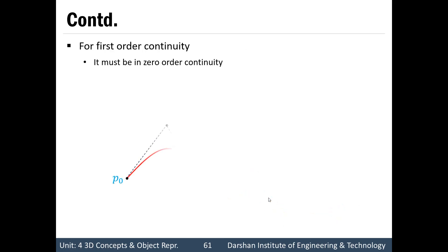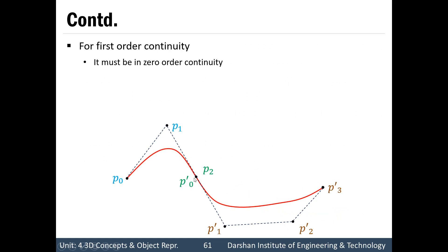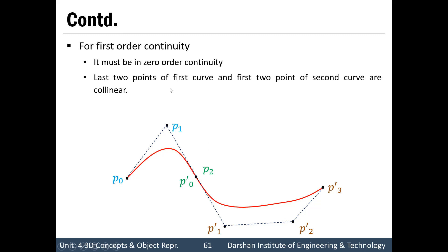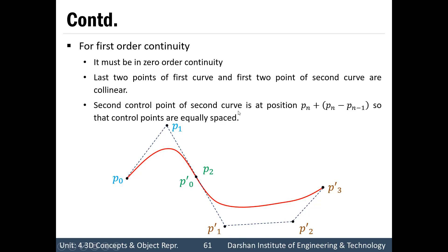For first-order continuity (C1), it must first satisfy C0 continuity — that is, the junction point is shared. Additionally, the last two points of the first curve section (P2 and P1) and the first two points of the second curve section (P0' and P1') must be collinear. The second constraint is that the second control point of the new curve section is at position Pn plus (Pn minus Pn-1), meaning the distance from P1 to P2 must equal the distance from P0' to P1' — i.e., the control points are equally spaced about the junction.